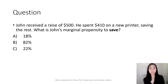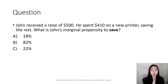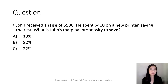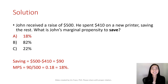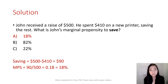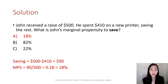Let's try a practice question. Suppose Zhang received a raise of $500 and spent $410 on a new printer. What is Zhang's marginal propensity to save? Pause the video and work on it, then we can compare answers. Here is the solution: Zhang's saving equals $500 minus $410, so Zhang saved $90. Therefore, the marginal propensity to save equals $90 divided by $500, which gives you 0.18, or 18%.